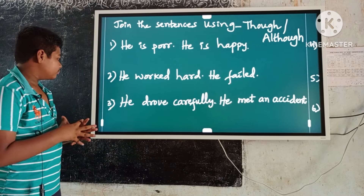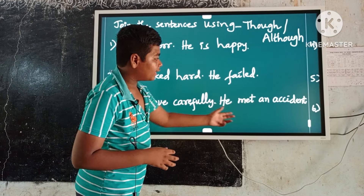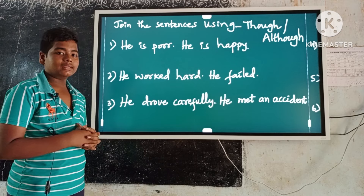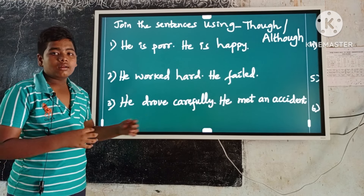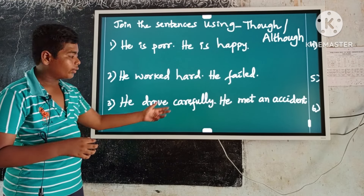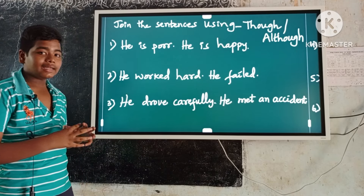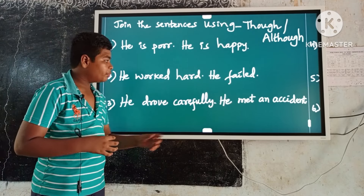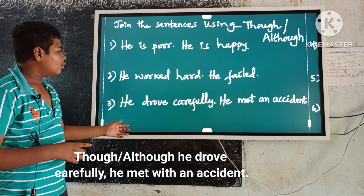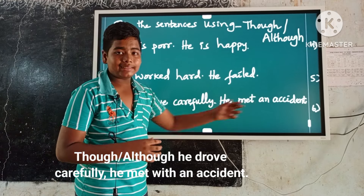Example number three: He drove carefully. He made an accident. These are contrast ideas. Here the first occurring sentence is 'he drove carefully.' Keep though or although before it, and a comma before the second sentence. So the answer is: Though or although he drove carefully, he made an accident.